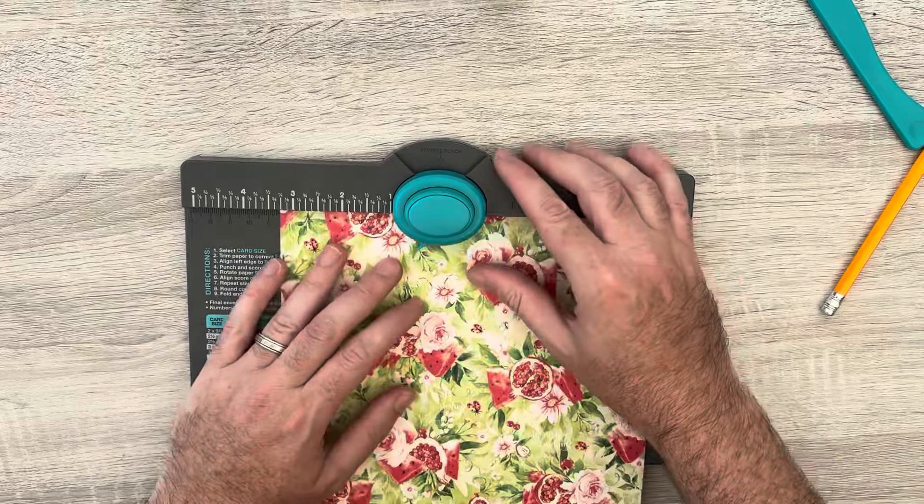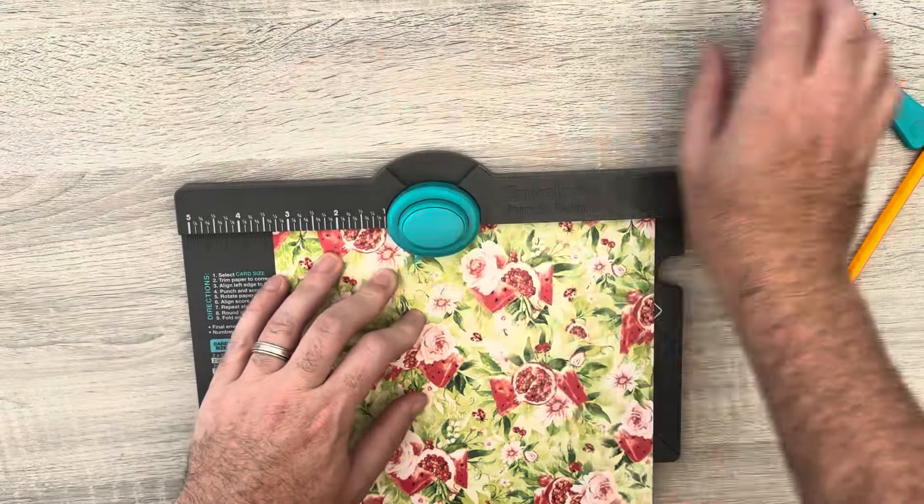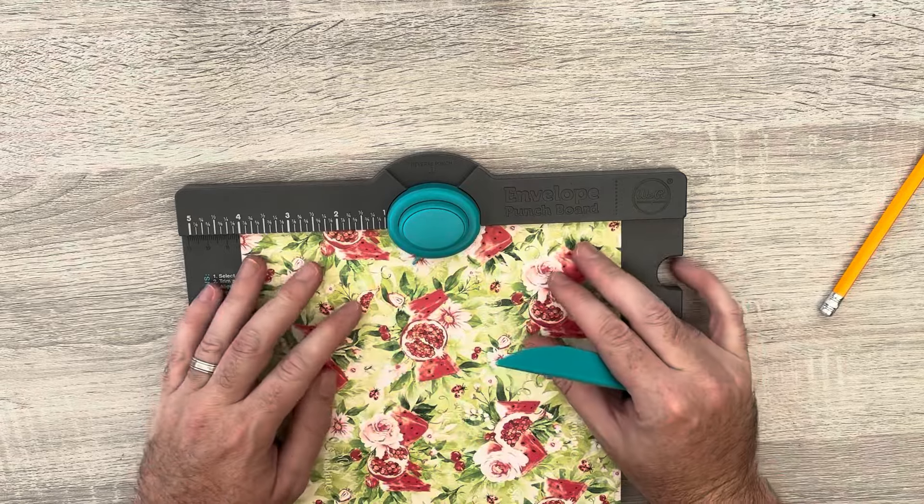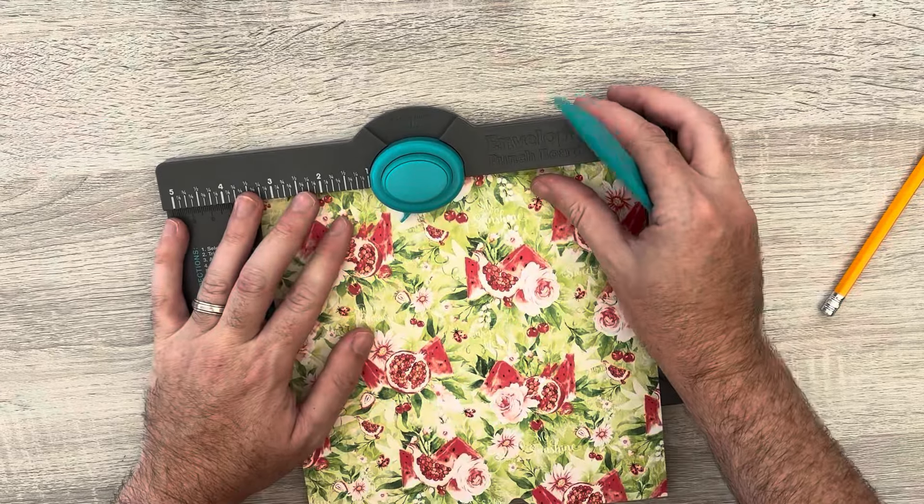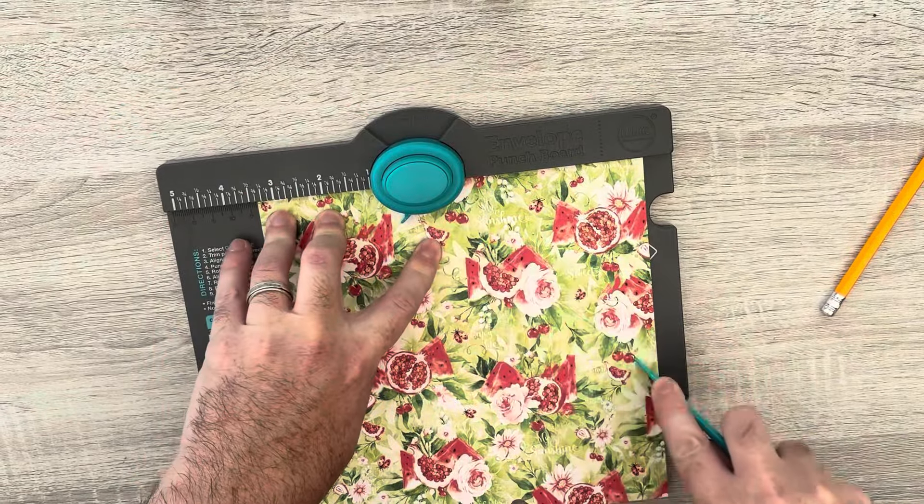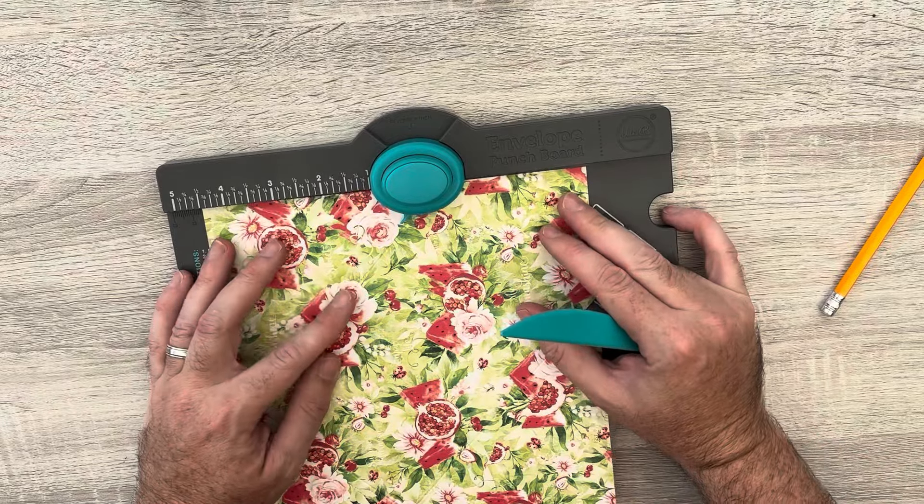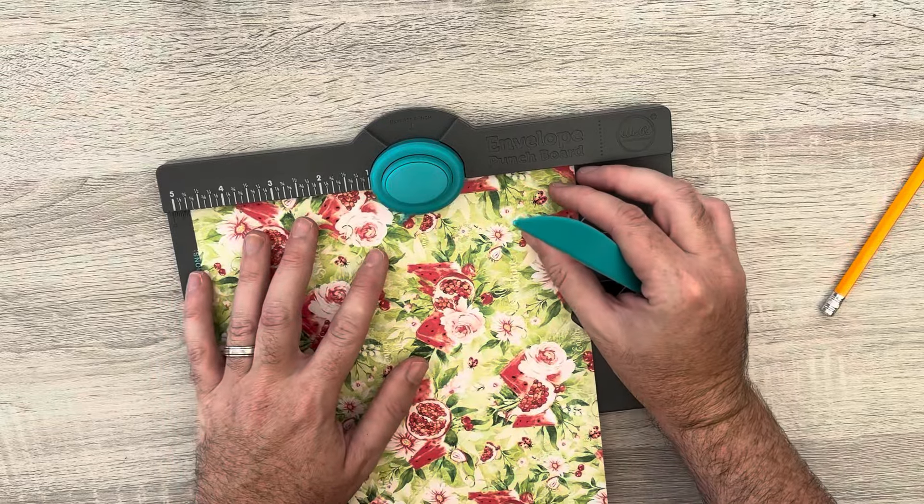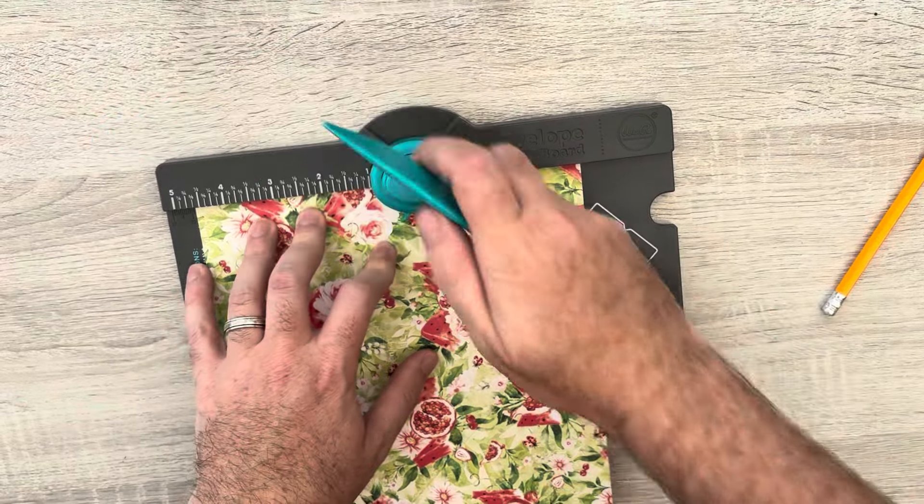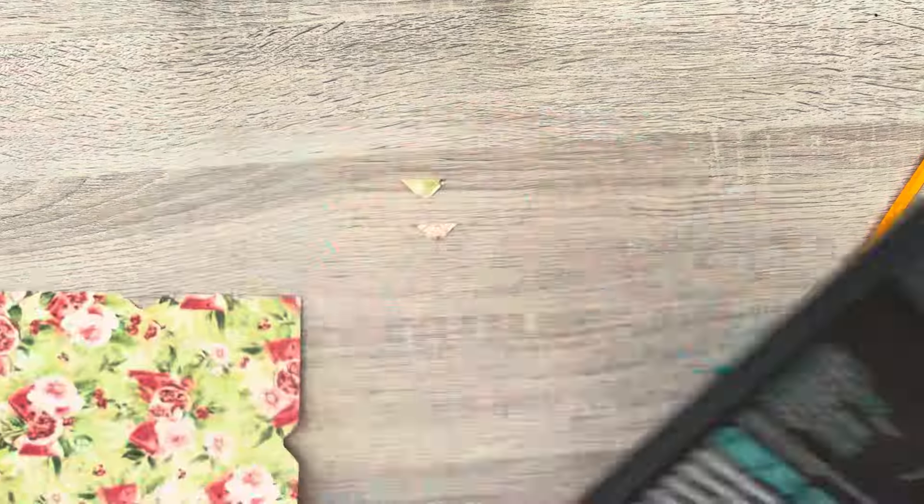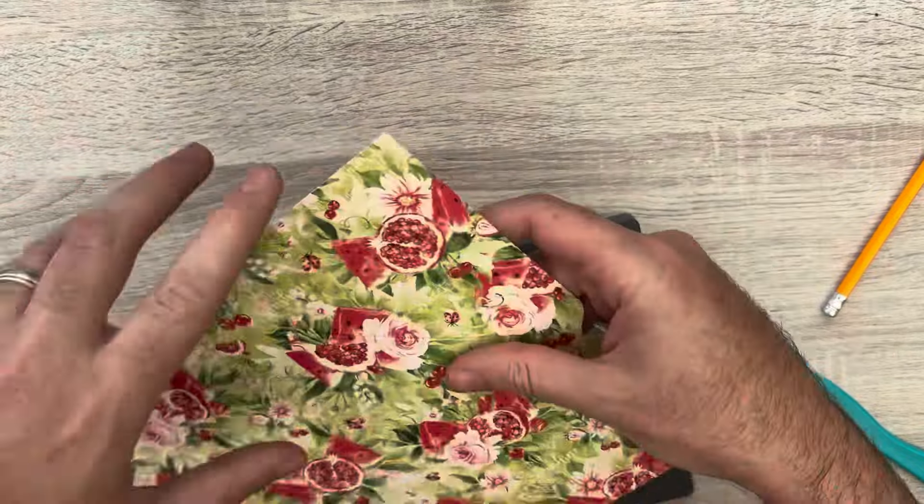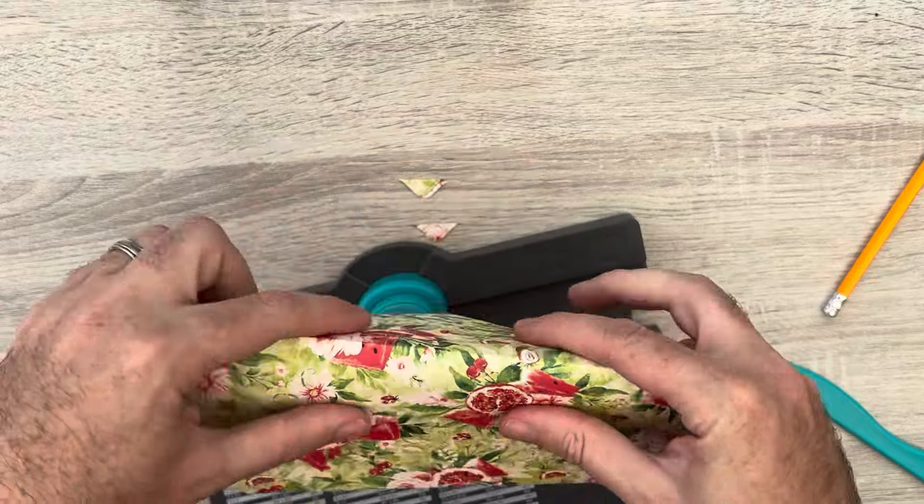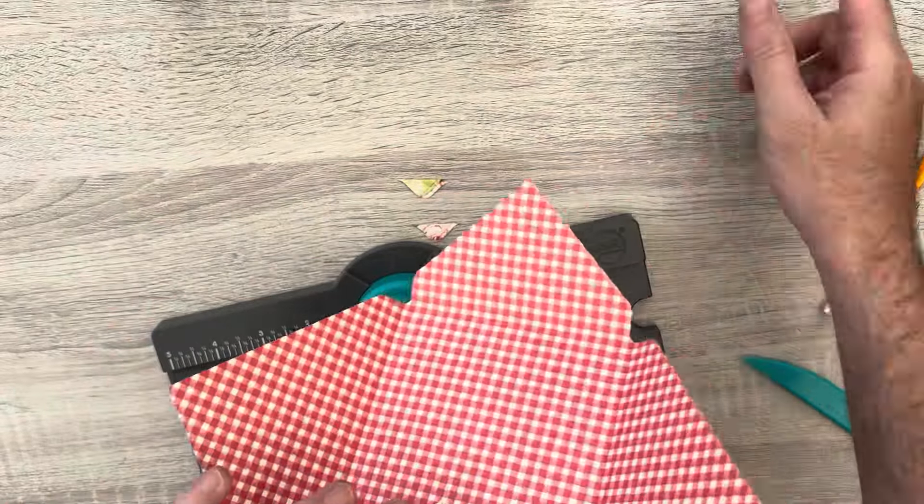And the other way is exactly the same setup. Three and 3/8ths, punch and score. Line it up, punch and score. So once you're in the rhythm of these, those 8x8 pieces of card or paper you had left over you weren't sure what to do with, all of a sudden have a purpose.